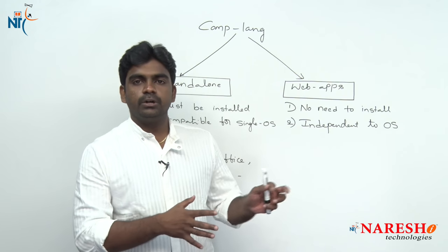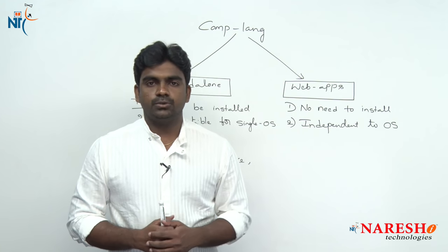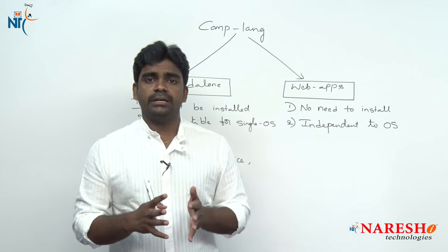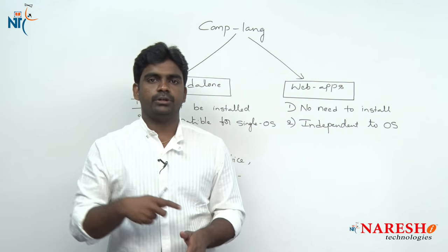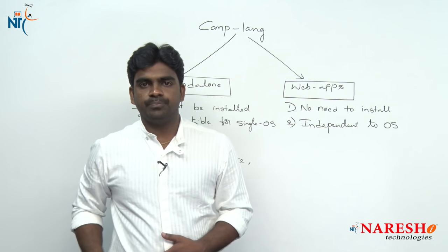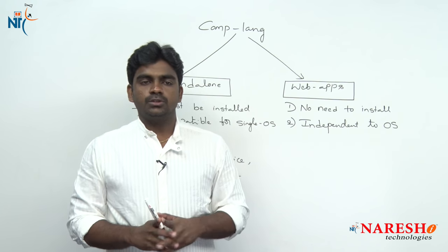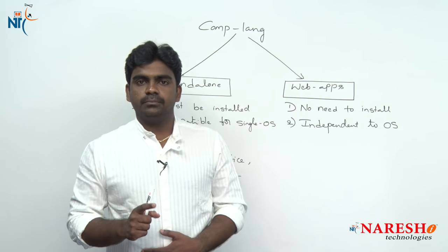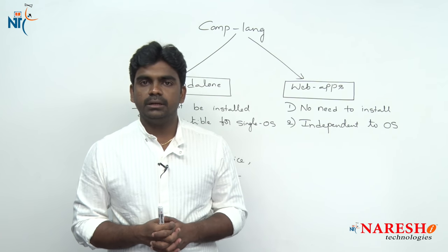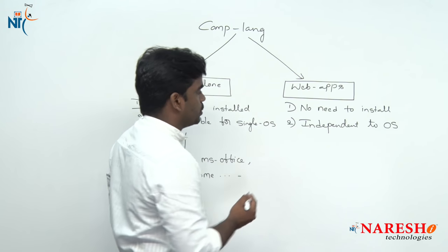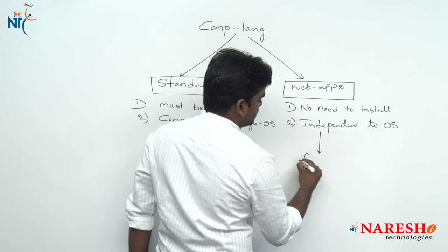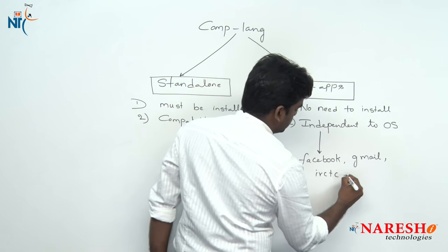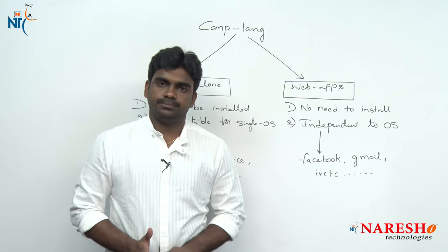For example, suppose I am using a Windows operating system, one friend is using a Samsung mobile with Android, and another person is using an iPhone with iOS. All three people open Facebook — is that allowed? Yes, it is allowed. From three different machines on three different operating system platforms, three people can interact at the same time. That is what we call independent of the operating system. Examples include Facebook, Gmail, and IRCTC — all come under web applications.